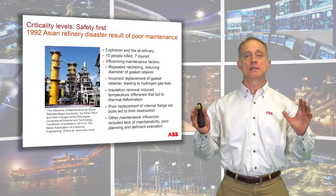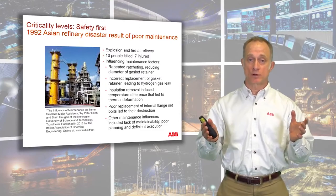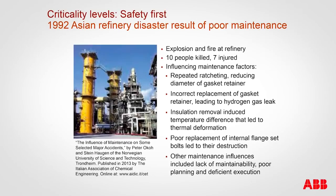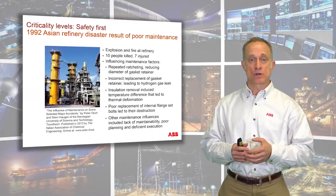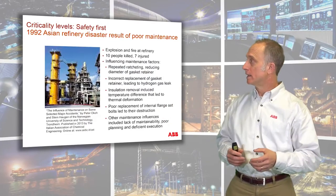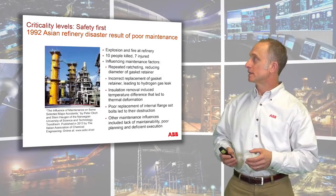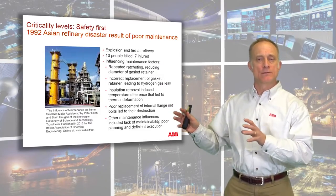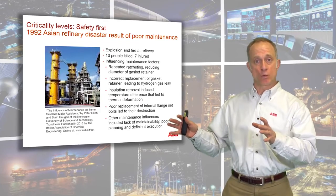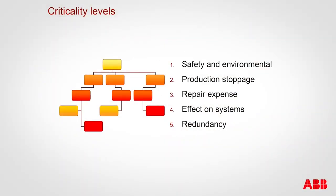For criticality, the first consideration should always be safety. Here is an example of a refinery in Asia that exploded in 1992, killing and injuring many people. The analysis determined it was a maintenance failure — repeated ratcheting, which could be an example of too much preventive maintenance. The right maintenance approaches were not taken, leading to disaster. Safety is always number one in criticality analysis, and environmental impact is at the same level.